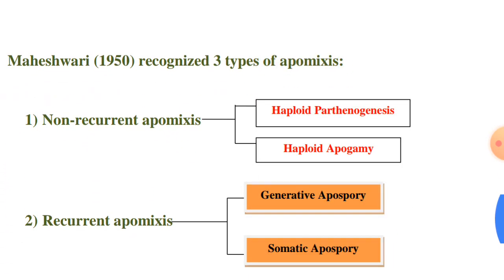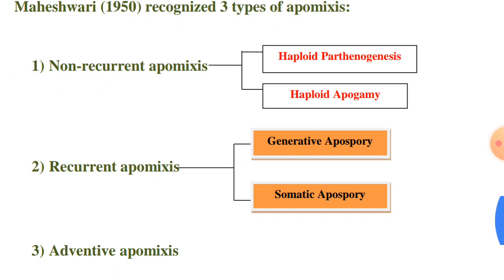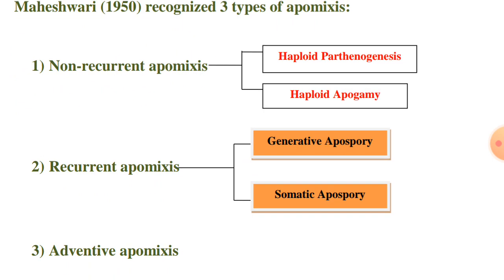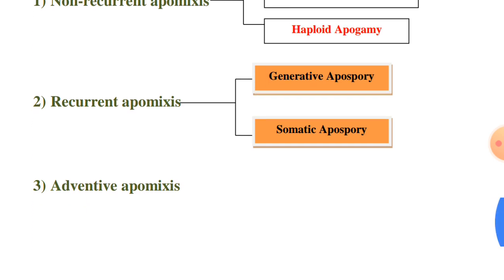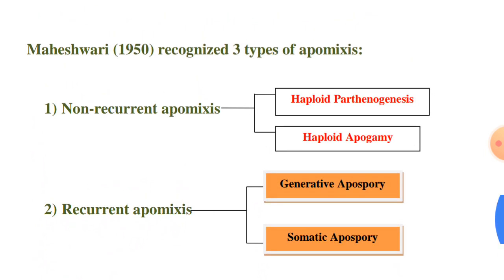P. Maheshwari (1950) recognized three types of apomyxis. He categorized apomyxis into non-recurrent apomyxis, recurrent apomyxis, and adventitious apomyxis. Non-recurrent apomyxis was categorized into two parts: haploid parthenogenesis and haploid apogamy. Recurrent apomyxis was further categorized into generative apospory and somatic apospory, and adventitious apomyxis. We have already discussed these terms earlier.